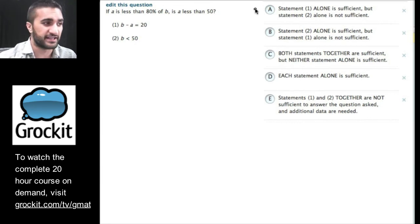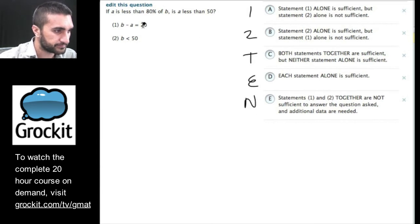So, let's take a look at another percent question. And this one is a data sufficiency. So, what are we going to do? We're going to do 1, 2, T, E, N. Great. Let's take a look at the question. If A is less than 80% of B, is A less than 50? Again, this is a slightly more difficult question in terms of the percentage of people that get it correct.